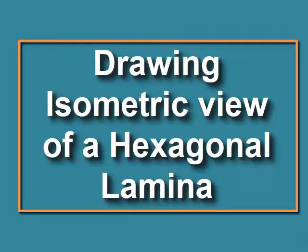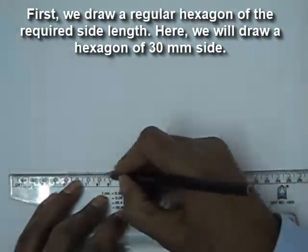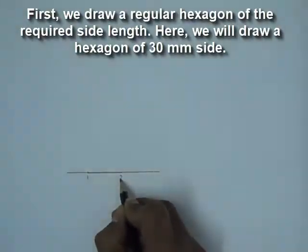In this video we will learn how to draw isometric view of a hexagonal lamina. So first we draw the hexagon. This is a regular hexagon of side 30 mm. So this is one side.